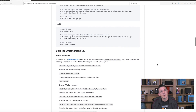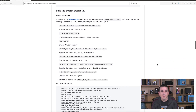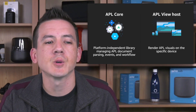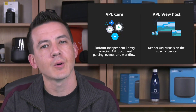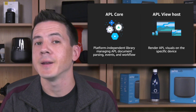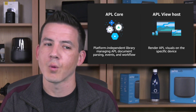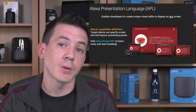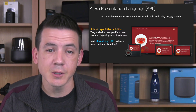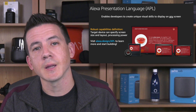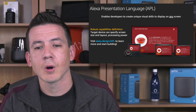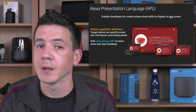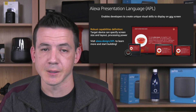The SDK builds upon our existing C++ device SDK for speakers and adds new visual support with the APL core engine and a view host for rendering. APL, or the Alexa Presentation Language, is the common visual design language across all Amazon and third-party Alexa devices.